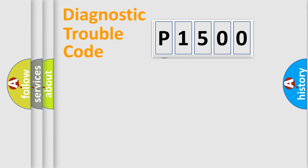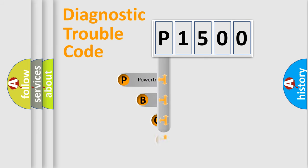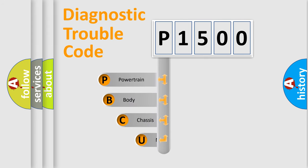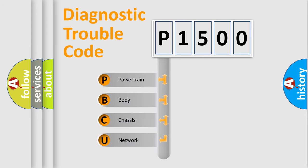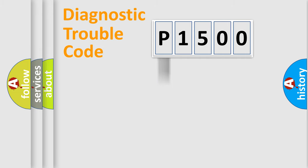First, let's look at the history of diagnostic fault code composition according to the OBD2 protocol, which is unified for all automakers since 2000. We divide the electric system of an automobile into four basic units: Powertrain, Body, Chassis, and Network. This distribution is defined in the first character of the code.